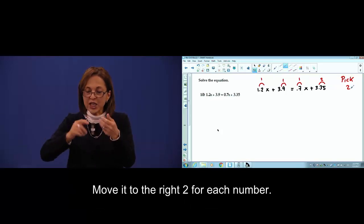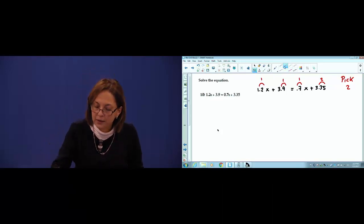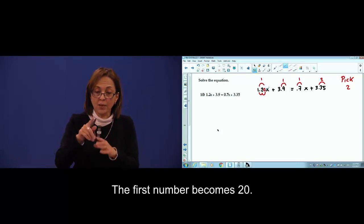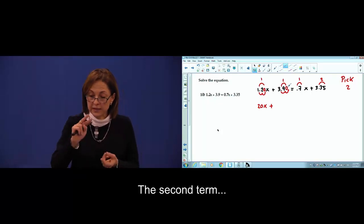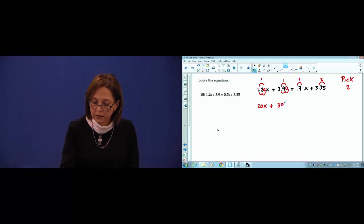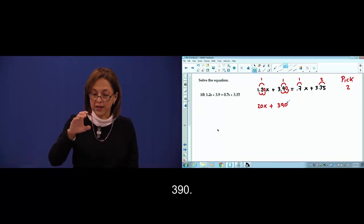One, two for each number. First number becomes twenty. Second, three hundred and ninety.